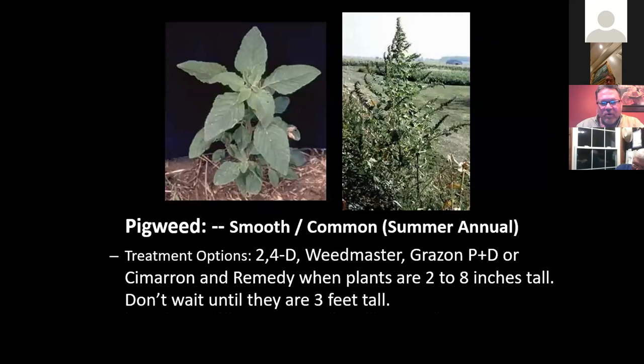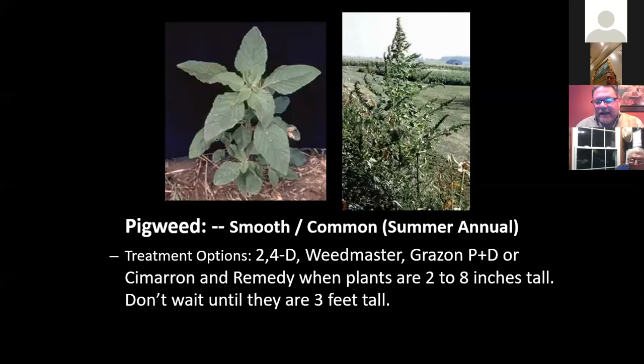Pigweed — difficult to control. We have seen some resistance to different chemicals on pigweed, and it's sporadic — one producer will have resistance while in the same area another producer can use the same product with no resistance. Some products we can use are 2,4-D and Weedmaster, but you've got to get them when they're small. If you wait until that weed is three or four feet tall, don't waste your money — you're not going to have any effect, and all you'll do is spread the weed seed.